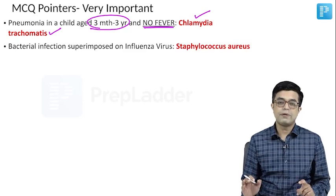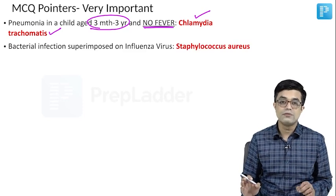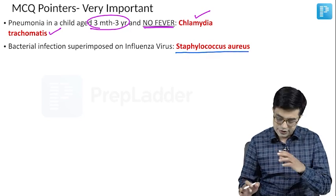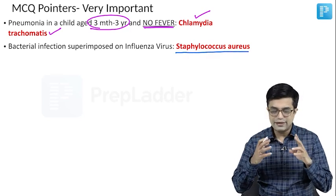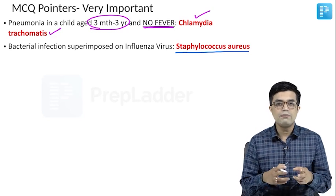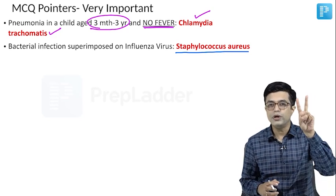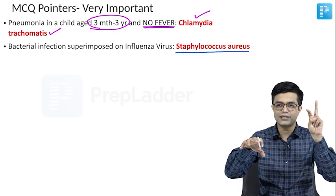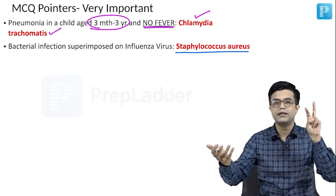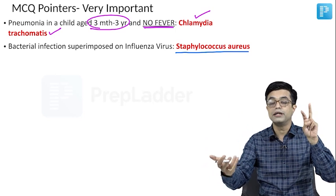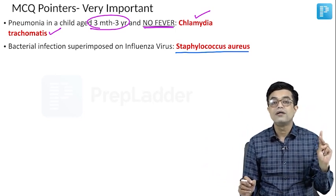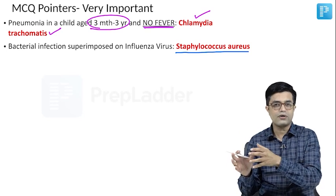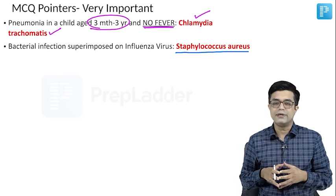Bacterial infection superimposed on influenza virus is most commonly caused by Staph aureus. Staph aureus has a tendency to cause superimposed infection on two important viral infections: first, influenza — if influenza gets complicated, it is usually complicated by Staph aureus; and second, measles. Both measles pneumonia and influenza pneumonia are complicated by Staph aureus.